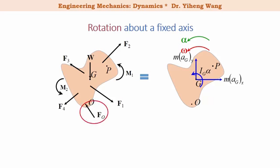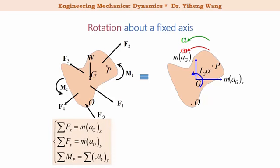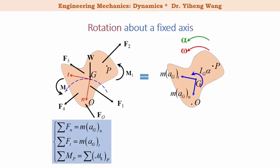When we remove the pin support at point O, we need to add the support reaction force. Now we can certainly apply the equations of motion for general plane motion. However, since this is rotation about a fixed axis, and from the kinematics of rotation we know that point G, the gravitational center, as well as any other point on this object, all follow a circular path. Therefore, it is more convenient to set up the normal and tangential coordinate system, originated at the gravitational center G, and summarize the forces along the normal and tangential directions instead of x and y.